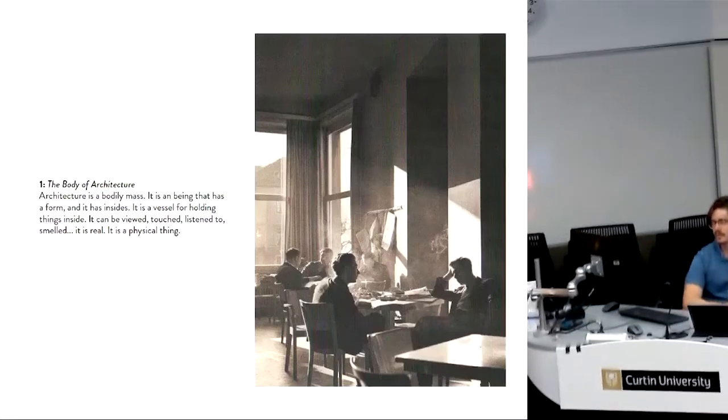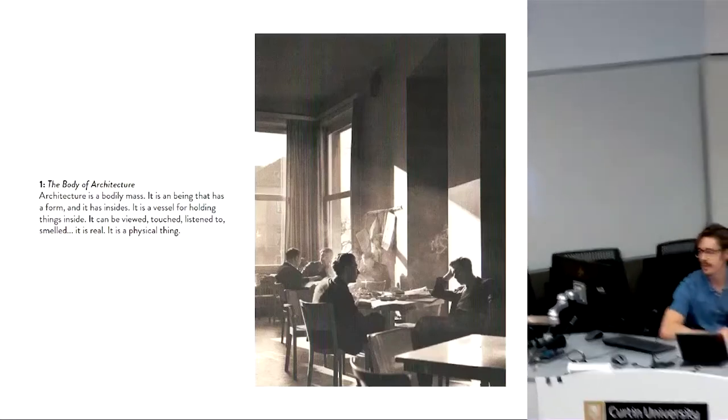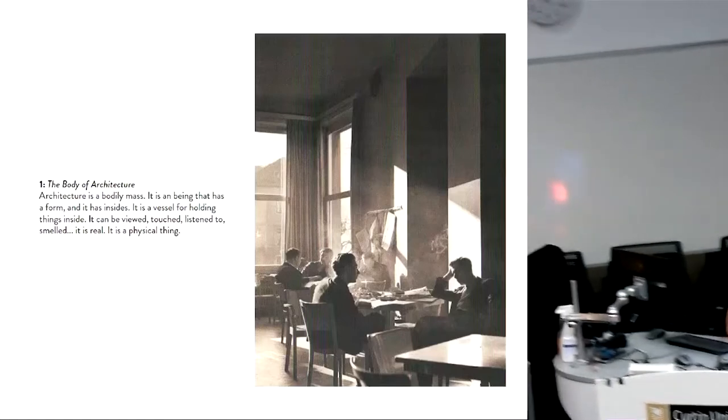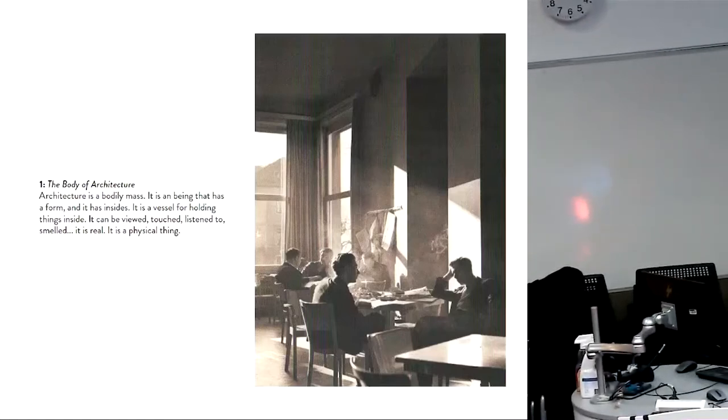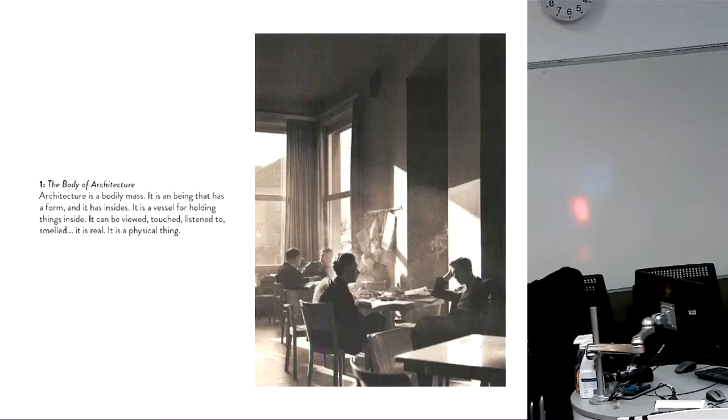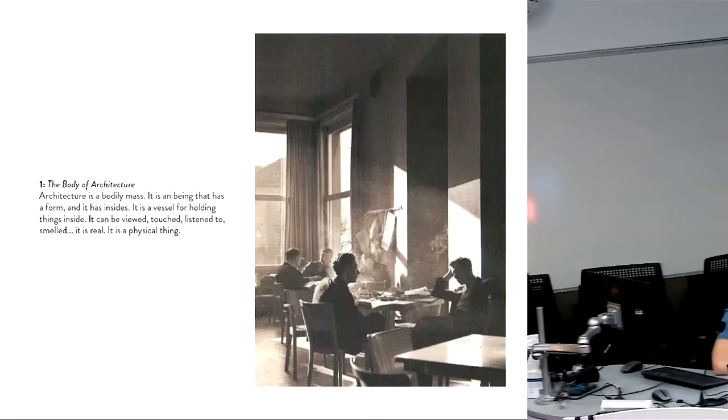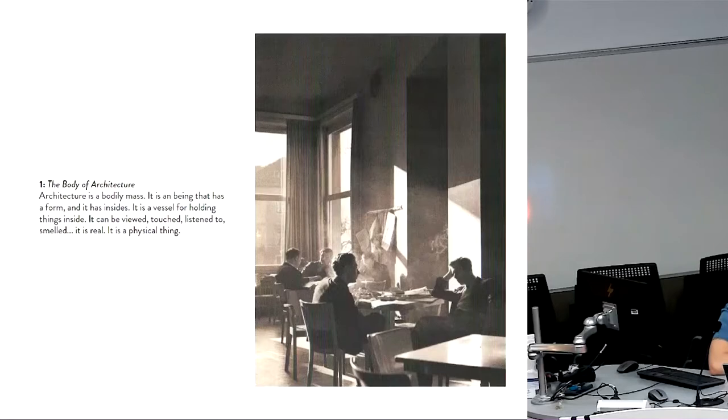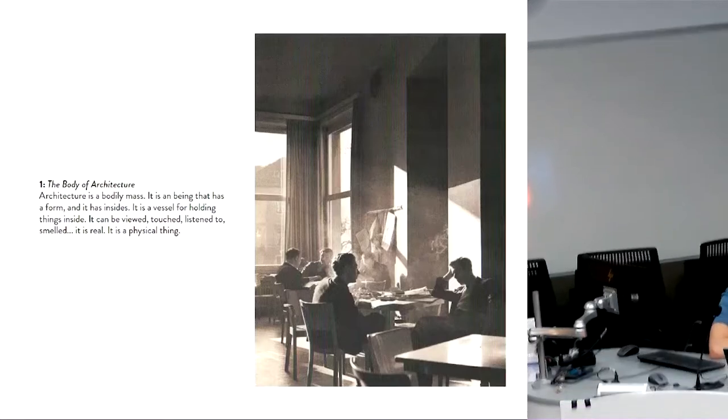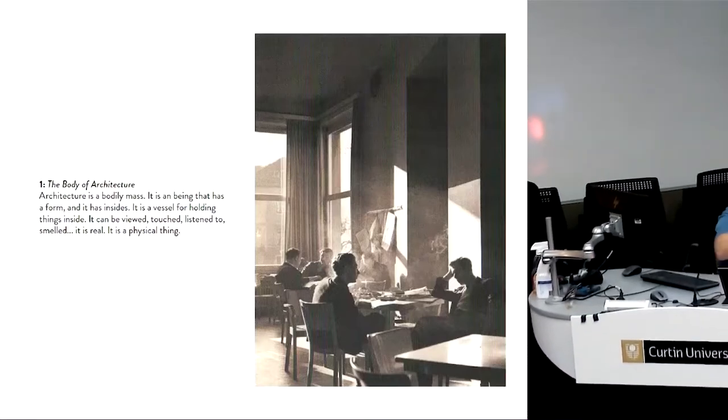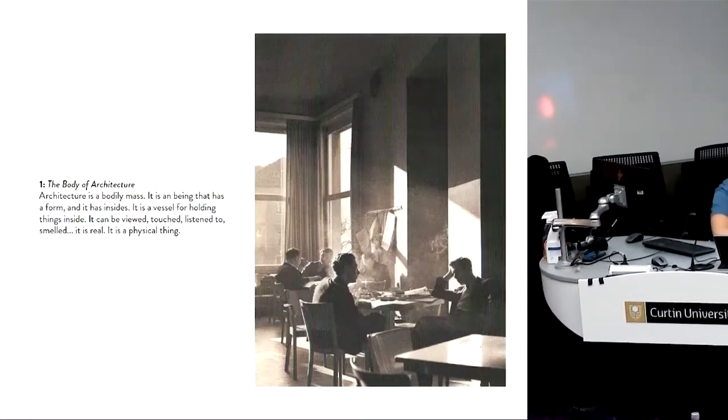Okay, so the first of the nine principles is what he calls the body of architecture. And he says that architecture is a bodily mass. It is a being that has a form. It has insides. It is a vessel for holding things inside. It can be viewed, touched, listened to, smelled. It is real. It is a physical thing. So architecture, unlike other mediums, maybe if we're talking about digital art or film or other things, architecture, first and foremost, is a physical thing. It's something that we can interact with. It has a tactility to it.